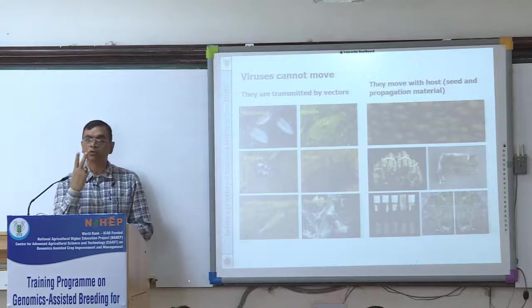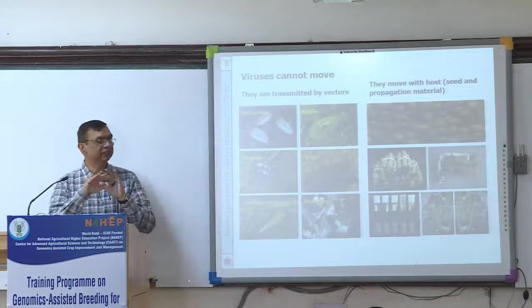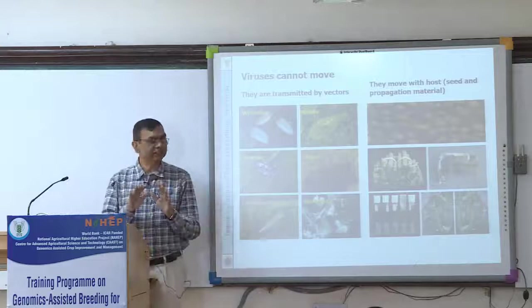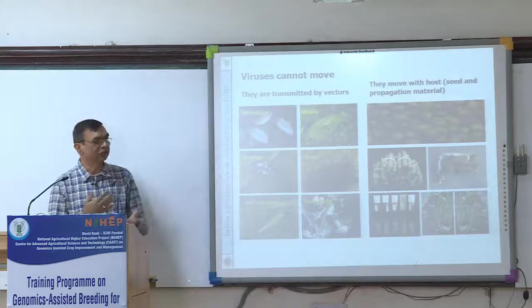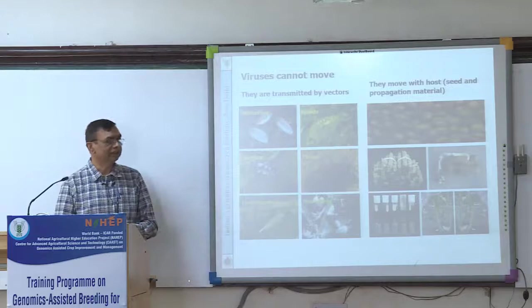Vegetatively propagated crops like sugarcane, banana, onion, and garlic are also carriers of viruses. There are two types of transmission: horizontal transmission, which is transmission by insect from one plant to another plant, and vertical transmission, from mother plant to progeny — like sugarcane and banana.